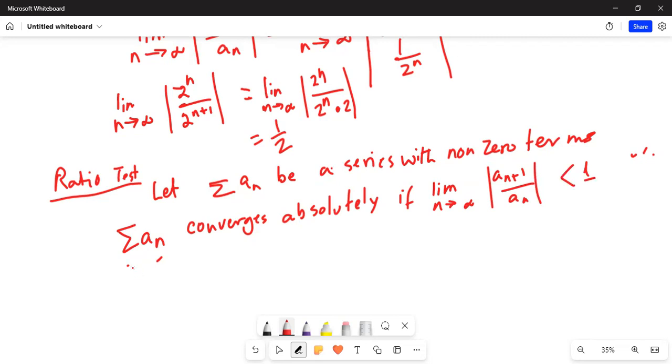So in our case, limit n tends to infinity, 2^n over 2^(n+1) is equal to half, which is less than 1. Hence, the given series converges absolutely.